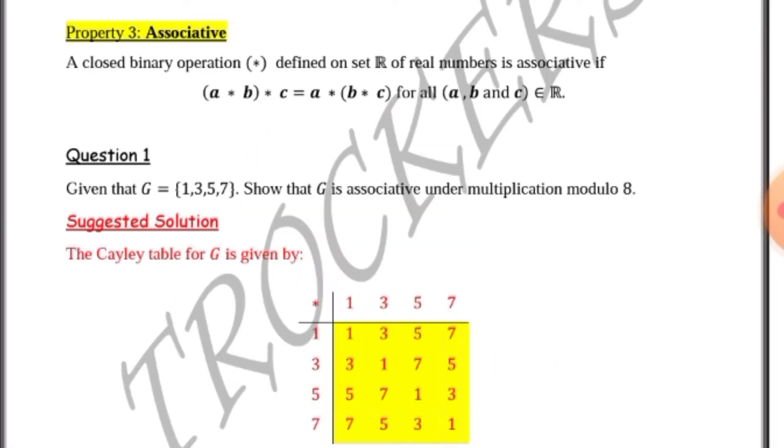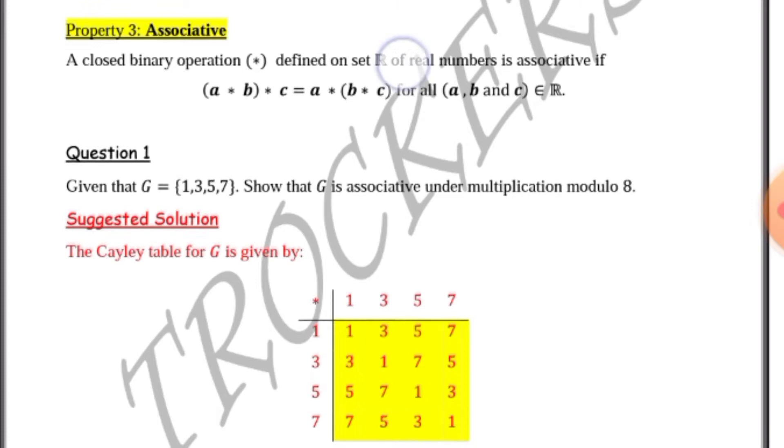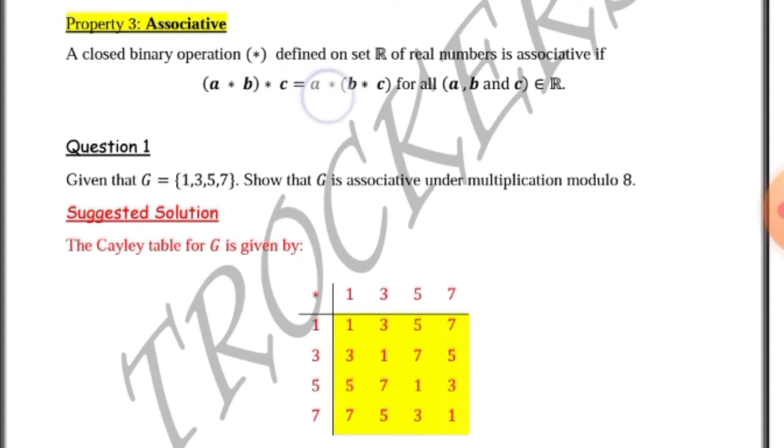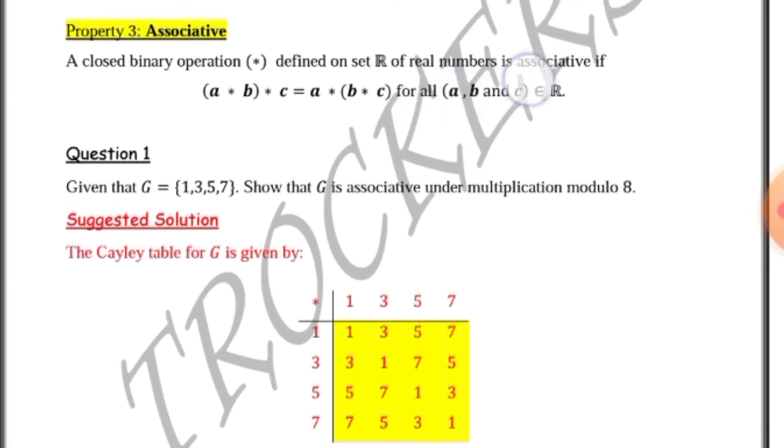In this video, we're going to learn about property 3 of binary operations: associativity. A closed binary operation star defined on set R of real numbers is associative if A star B star C is equal to A star B star C for all A, B, and C elements of real numbers.